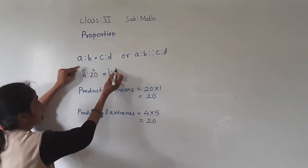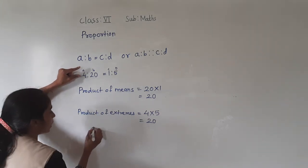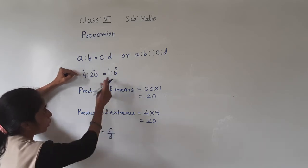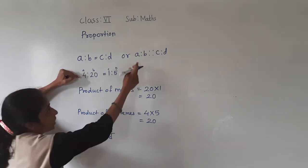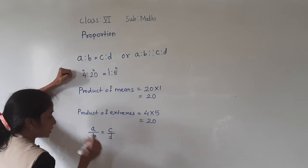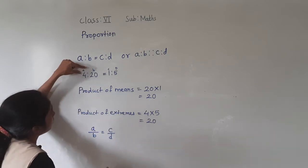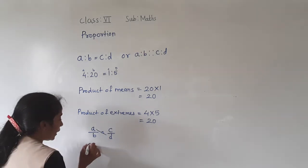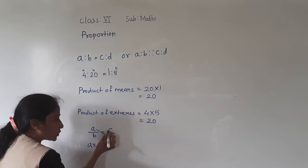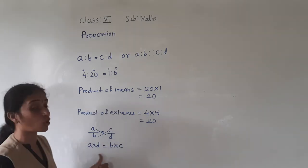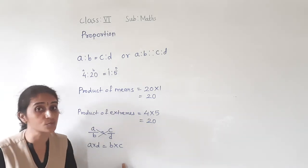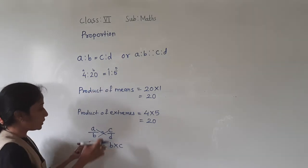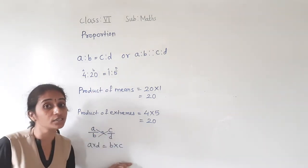So A is to B as C is to D. Writing this as fractions: A upon B is equal to C upon D. From this we can also take cross products: A into D is equal to B into C. In proportion, their cross products are equal — A into D equals B into C.